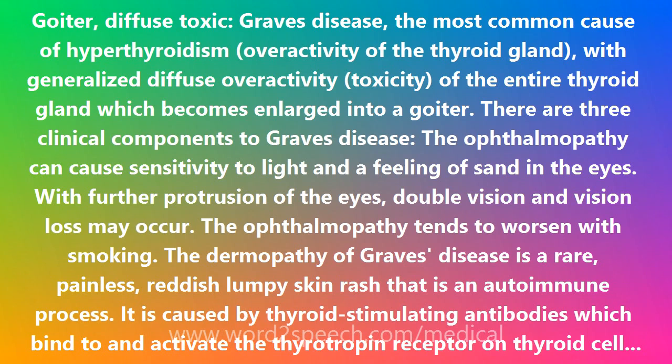There are well-established associations with certain HLA types. Linkage analysis has identified gene loci on chromosomes 14q31, 20q11.2, and Xq21 that are associated with susceptibility to Graves' disease.